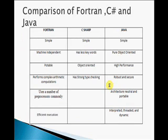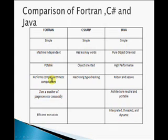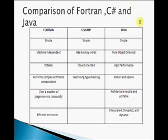This table gives a brief description of the three languages. Fortran is simple, independent, and portable, and is widely used to perform complex arithmetic operations with fast efficiency. C Sharp is also a simple language but has relatively fewer keywords; it is object-oriented with strong type-checking. Java is a purely object-oriented programming language that is simple, high-performance, robust, and secure.